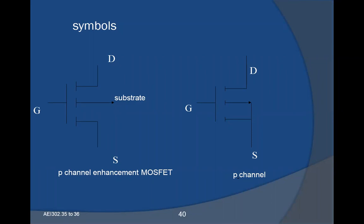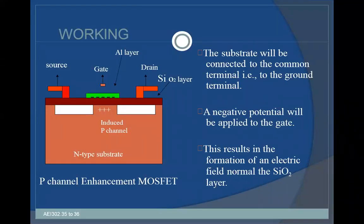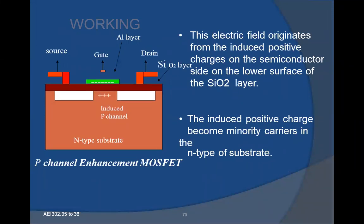This is the symbol of the P-channel enhancement MOSFET. The substrate is connected to the common terminal, that is, to the ground terminal. A negative potential is applied to the gate, which results in the formation of an electric field normal to the silicon dioxide layer. This electric field originates from induced positive charge on the semiconductor side on the lower surface of the silicon dioxide layer. The induced positive charges become minority carriers in the N-type substrate.